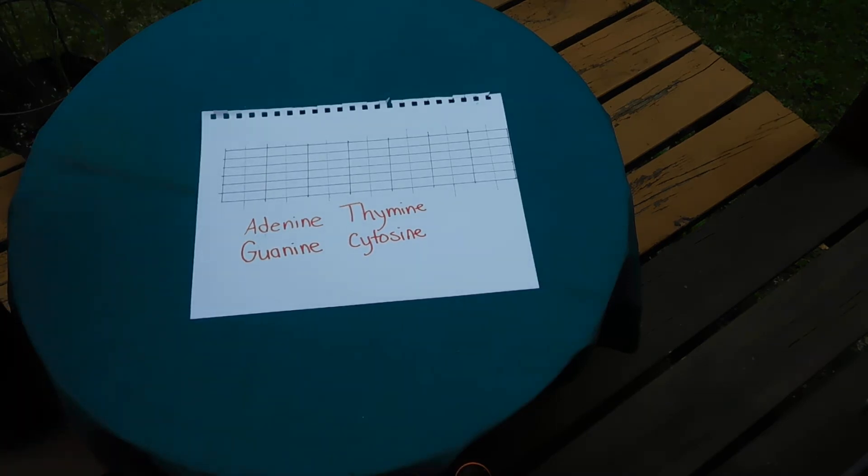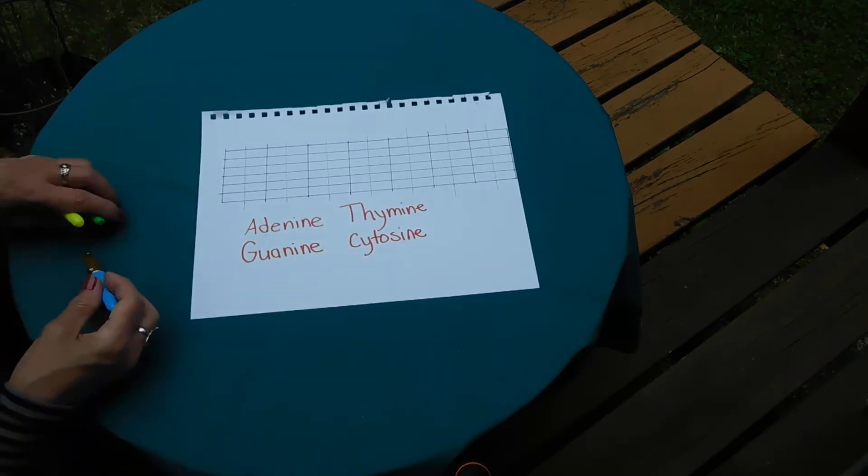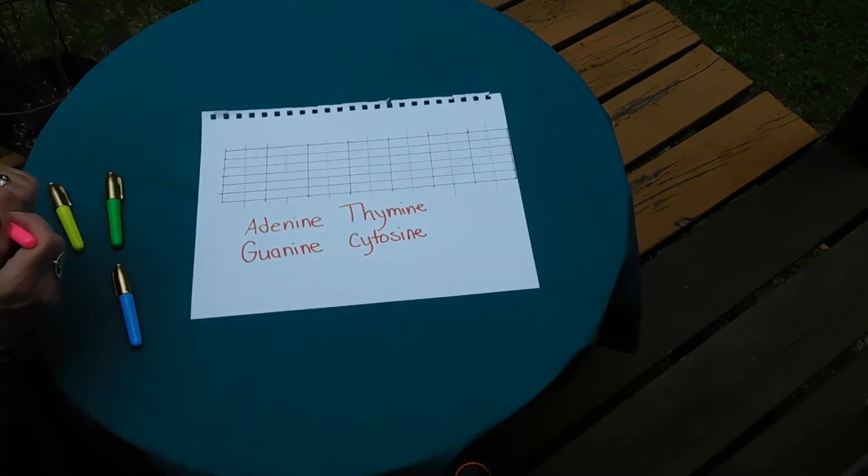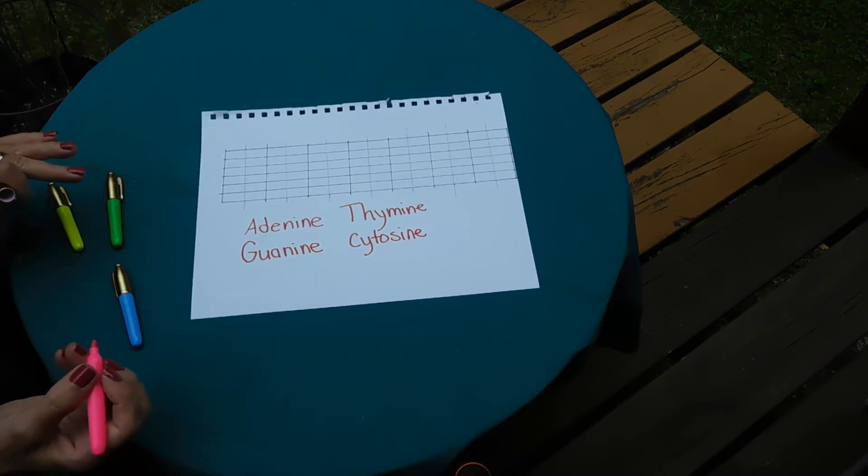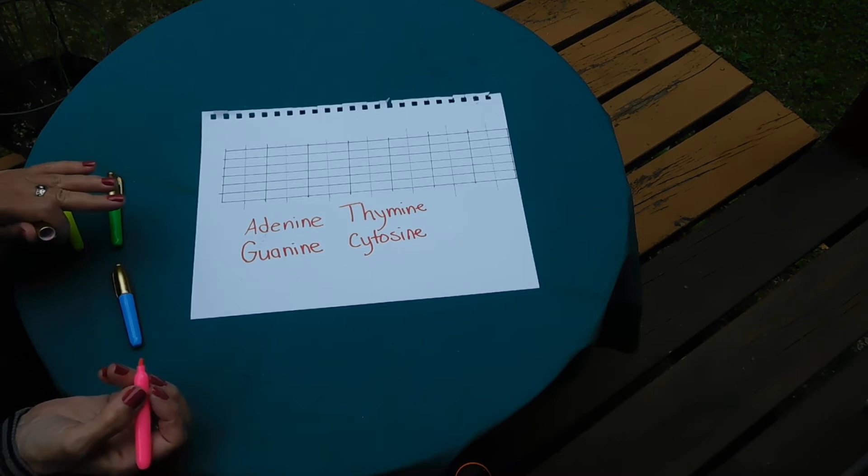So if you remember, our four bases in the DNA molecule were adenine, thymine, guanine, and cytosine. Adenine, so you can decide what colors you want to represent each of these bases.